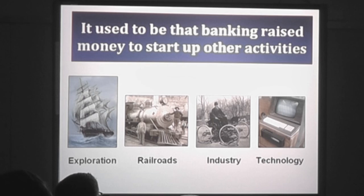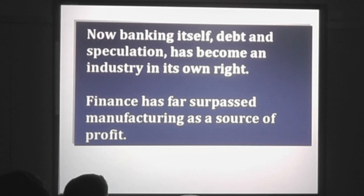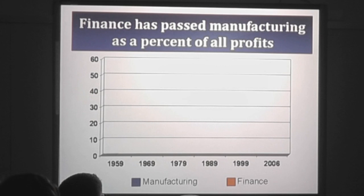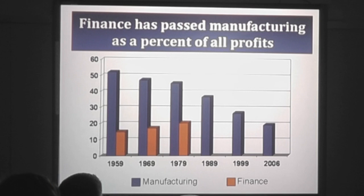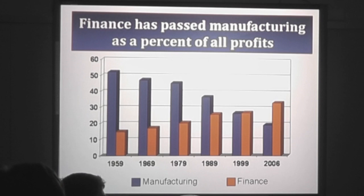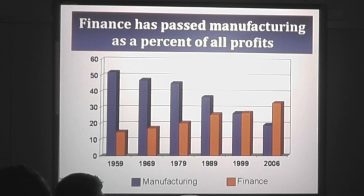It used to be that banking raised money to start up other activities. But now banking and debt speculation have become an industry in their own right. Finance has surpassed manufacturing as a source of profit. The percentage of profits from manufacturing is declining, while the percentage from finance is increasing. This demonstrates that capitalism in mature countries is going through financialization — money moves out of industry and productive activities and into speculation, where new fortunes get made. Unless you invent the iPod. There's still room for that, but the main trend is financialization.